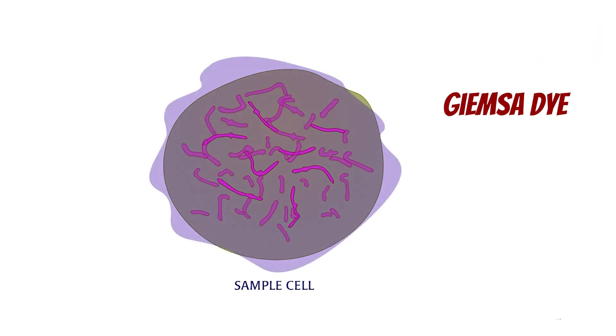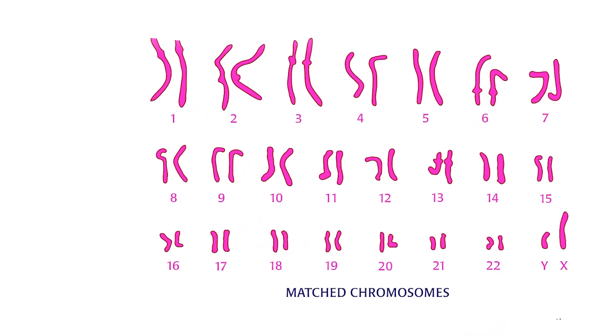The puffed-up cells are placed on a slide, stained with a dye called Giemsa dye, and then viewed under a microscope. A photograph of the slide is taken and enlarged for final matching up of the chromosomes. A computer is used to pair up matching chromosomes.